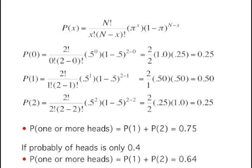If you flip a coin twice, what is the probability of getting one or more heads? Since the probability of getting exactly one head is 0.50, and the probability of getting exactly two heads is 0.25, the probability of getting one or more heads is 0.50 plus 0.25, which equals 0.75.